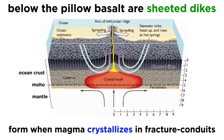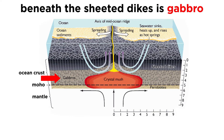Over time, clusters of basalt columns form, creating a sheeted dike complex that looks like a row of several-meter-long dominoes standing side by side.